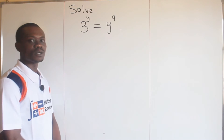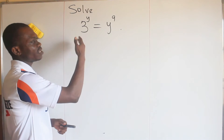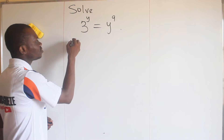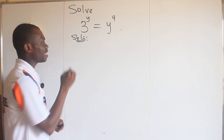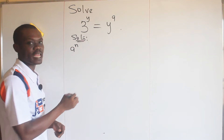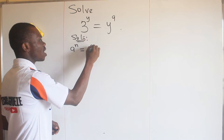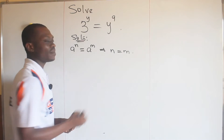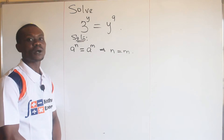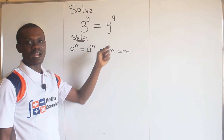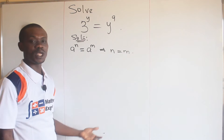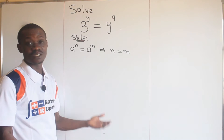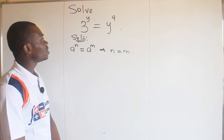Now what are we going to do? It is easy to see that when there is an equality sign in indices, there is a rule that says if I have a to the power of n equal to the same a to the power of m, then n is equal to m. But in this case, the base on the right hand side is a variable, so this particular rule will do little or nothing for us.